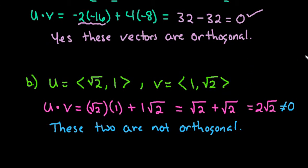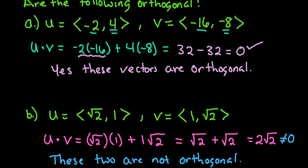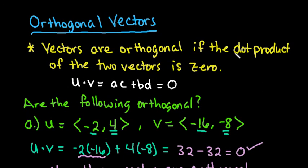Just to recap, remember that in order for two vectors to be orthogonal, they have to have a dot product of zero.